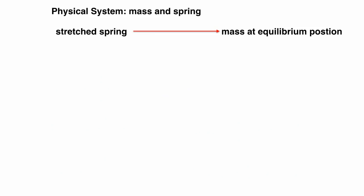Our physical system is a mass and a spring. We begin with a stretched spring and end with the mass at the equilibrium position. Since the surface is slippery, we will ignore friction and then we must have a closed system.